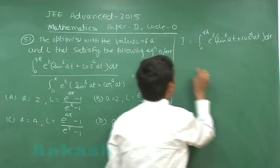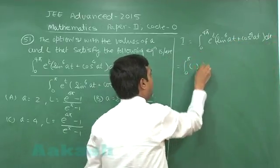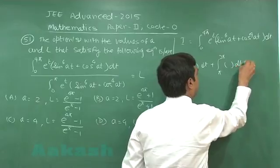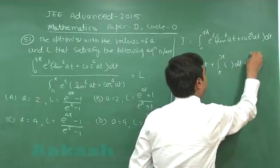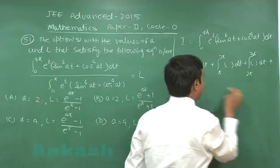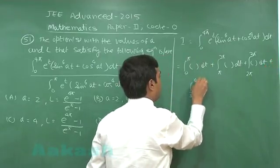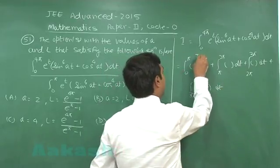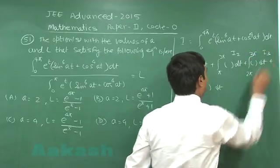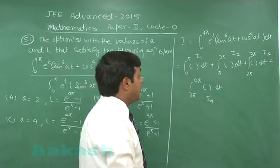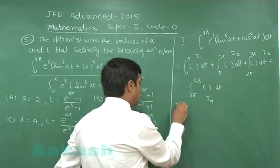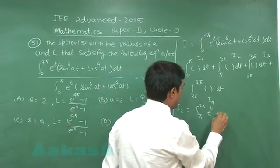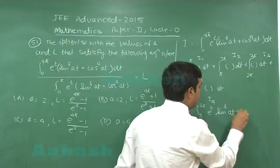We can break this integral as: 0 to π, plus π to 2π, plus 2π to 3π, plus 3π to 4π. Let us consider these as I₁, I₂, I₃, and I₄. Looking at I₂, which is the integral from π to 2π of e^t (sin(6at) + cos(4at)) dt.